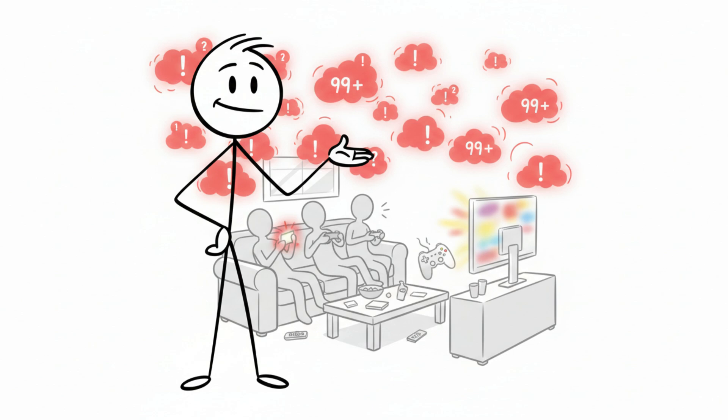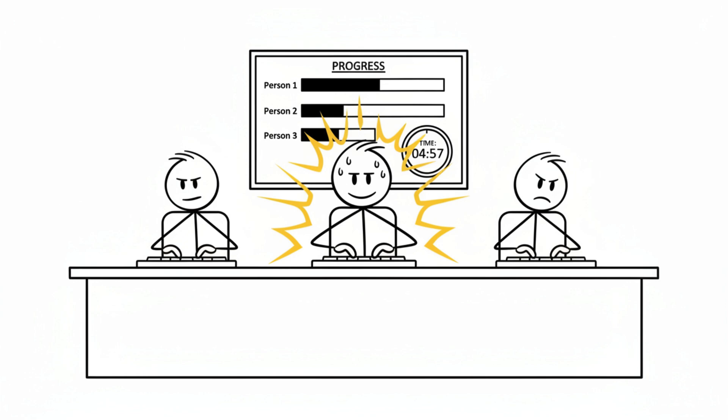If you're around distraction, your brain normalizes avoidance. Working alongside others creates pressure and accountability.